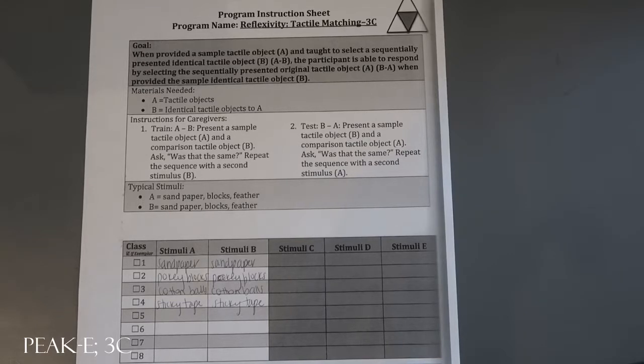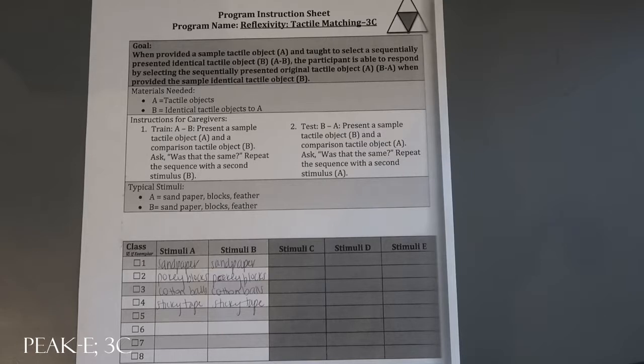For us in our boxes, we have eight Kleenex boxes that we filled with items: two with sandpaper, two with pokey blocks, two with cotton balls, and two with sticky tape. There's also that visual comparison for the participant to see that they're comparing two items or two options together.